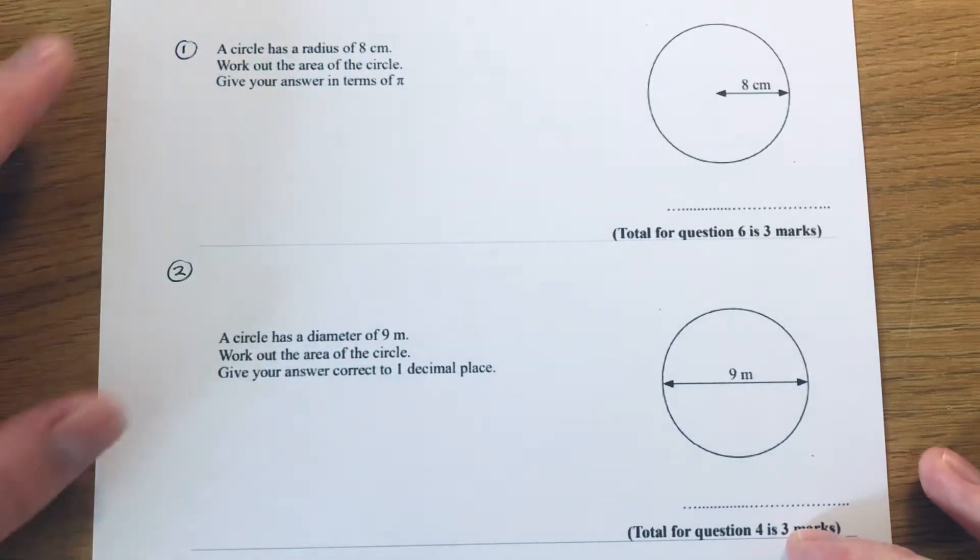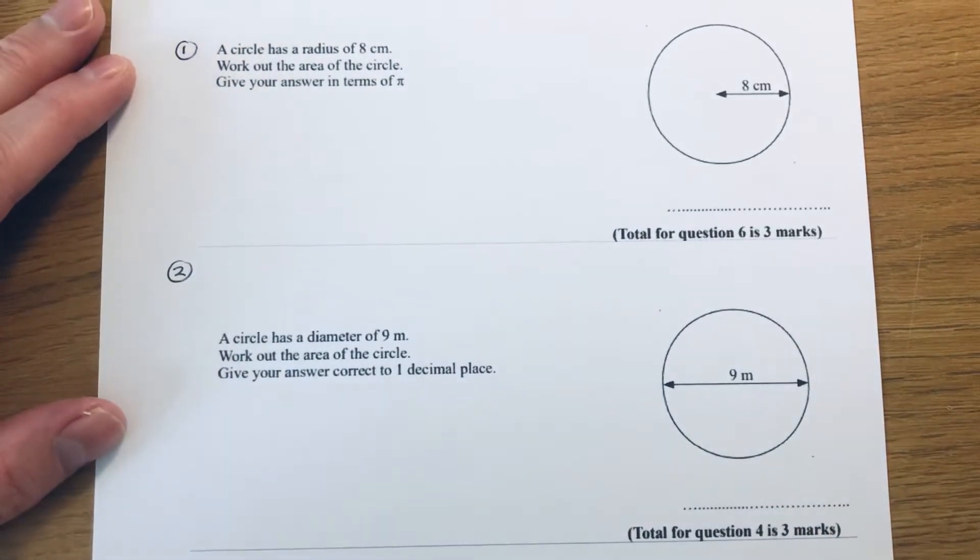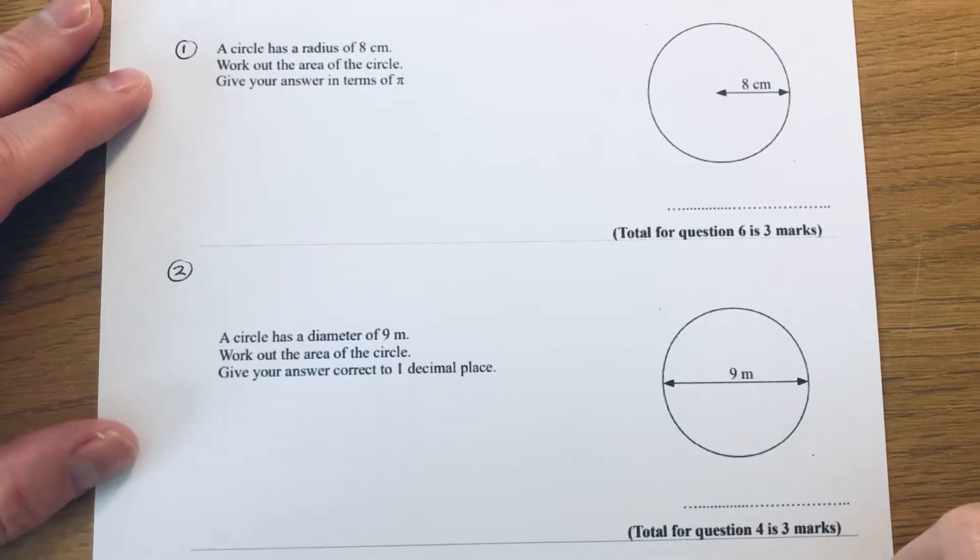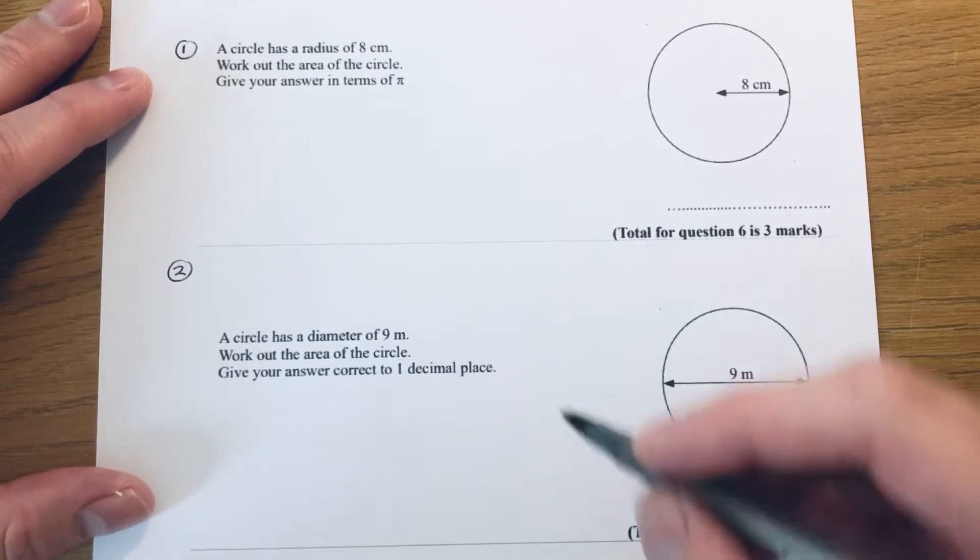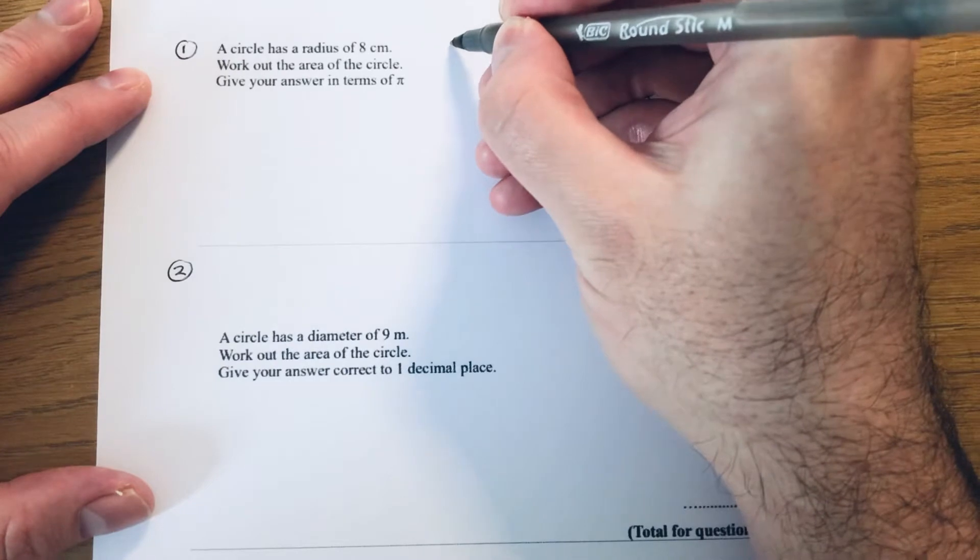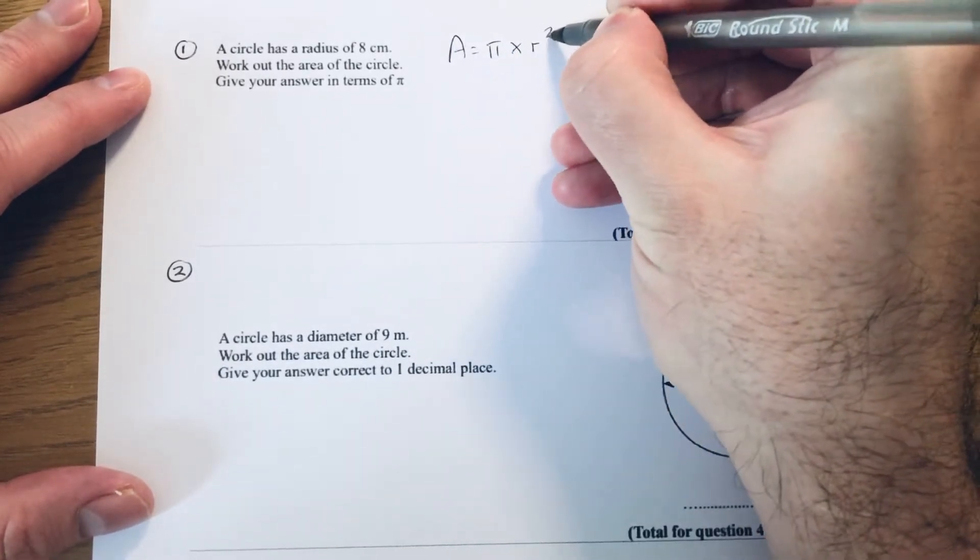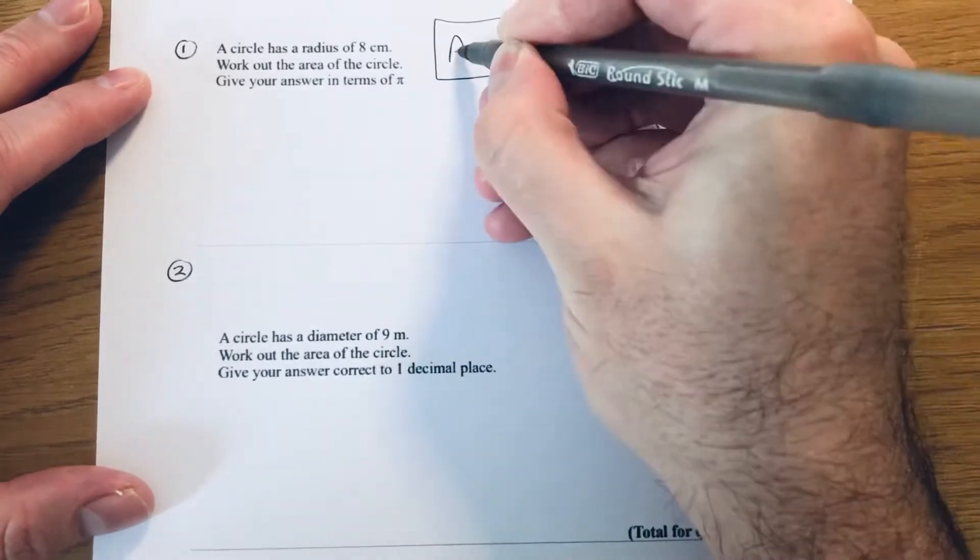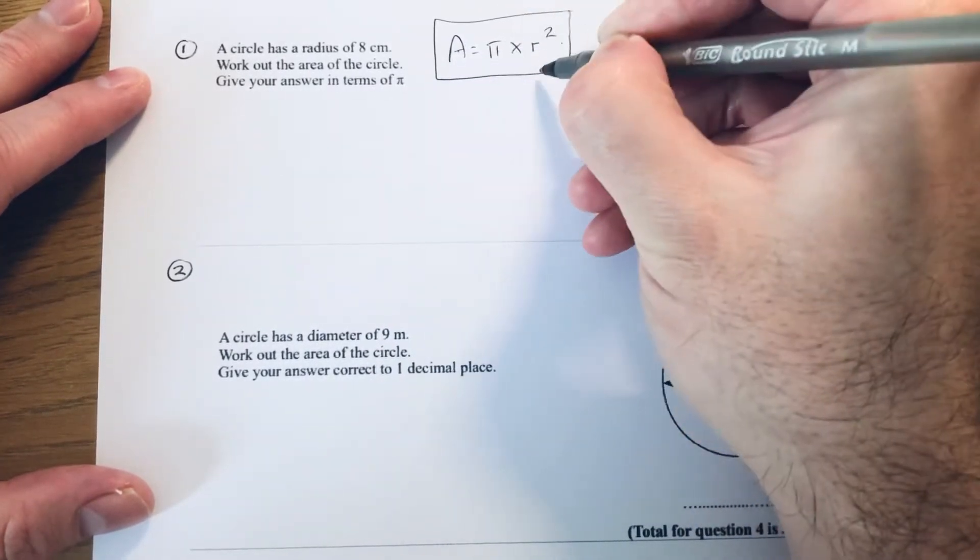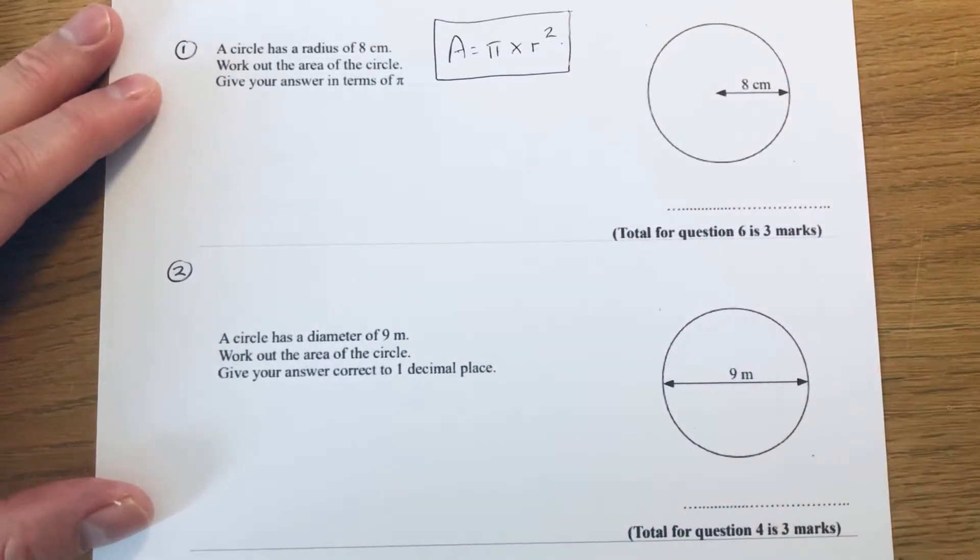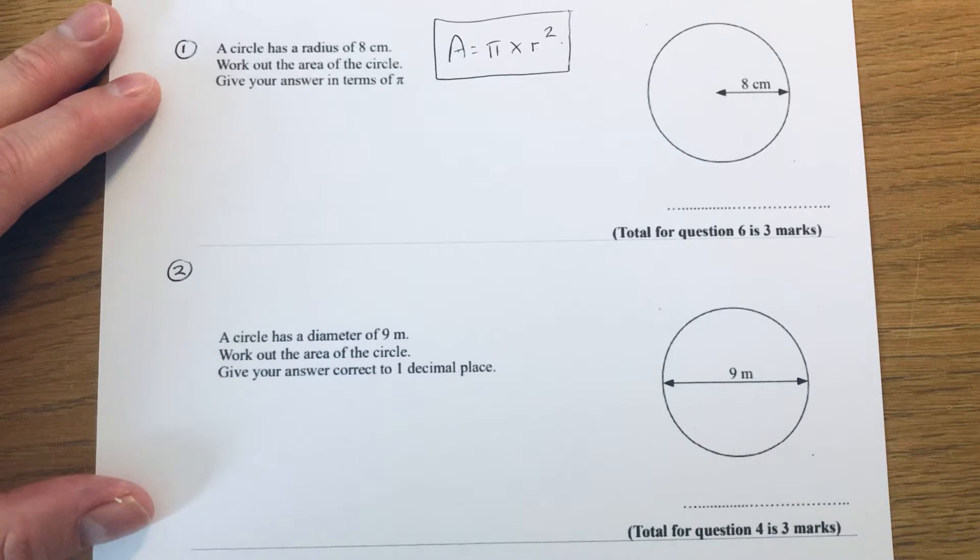Hi guys, welcome back. This is Maths 3000. Today I'm going to go over some exam questions on working out the area of a circle. To work out the area of a circle, you need to know the formula: A equals pi times the radius squared. So A is the area, pi is somewhere there, and r stands for the radius. When you're working out the area, you need to put the radius into the formula.